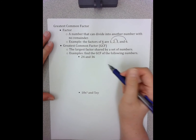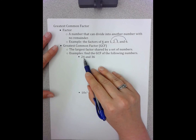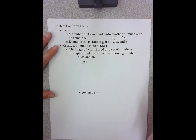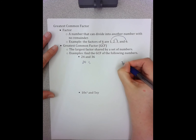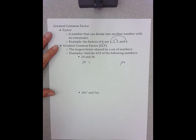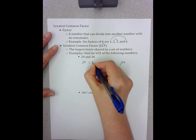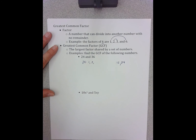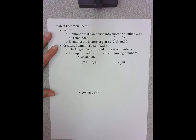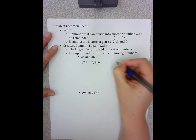So I start by writing all the factors of 24. The way I tend to do this is I always start with one, and then I put the matching number out on the end — so one times 24. Then I just go up the list. Is 24 divisible by two? Yes, it's two times 12. Is 24 divisible by three? Yes — three times eight. Is 24 divisible by four? Yes — four times six.